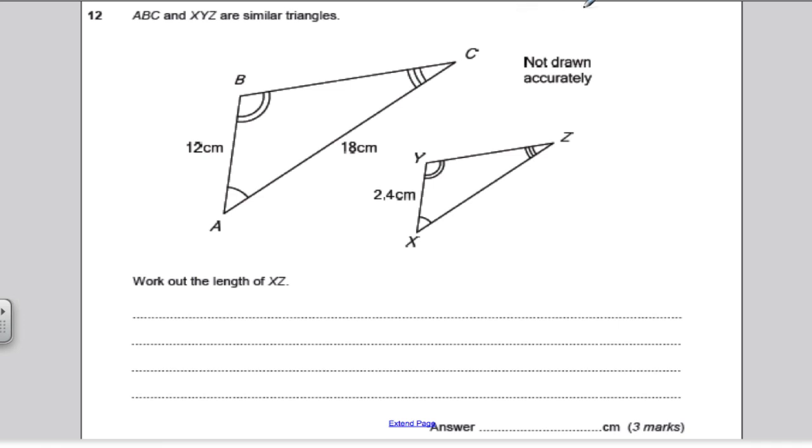Again, about similar triangles, it tells us that ABC and XYZ are similar, so these triangles are similar. However, that angle is the same as that angle, that angle is the same as that angle, and the leftover one must be the same as that one. It asks us to work out the length of XZ, so we're trying to find this length here. Similar shapes have the same angles inside and have the sides related by a scale factor.